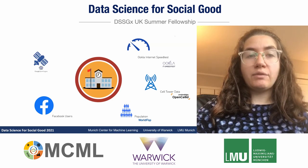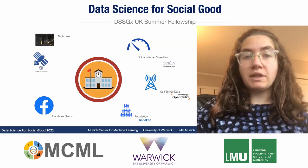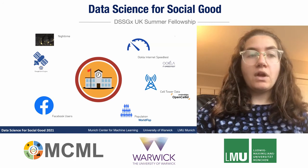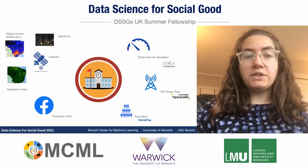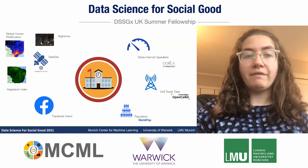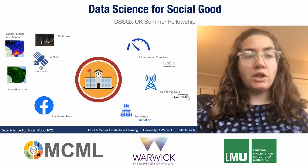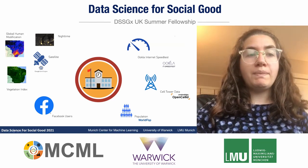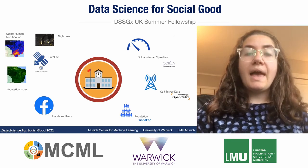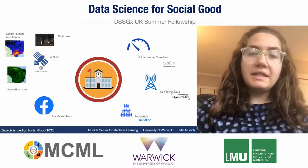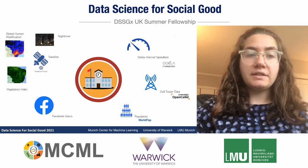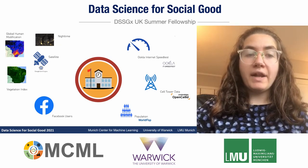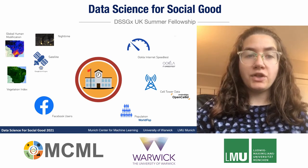Lastly, we have satellite data in three different forms. Nighttime lights shows areas with lots of light and presumably high levels of internet. Global human modification is a dataset created by engineers. And measuring vegetation is our last dataset — the assumption is that areas with higher vegetation are more rural and have less internet connection, while areas with low levels are more urban and have higher connection. Nighttime imagery, global human modification, and Facebook users prove to be the most important features powering our model. These datasets are continuous, meaning they don't stop at a certain spatial scale or boundary — they are globally ubiquitous and standardized, and don't contain the human error that survey data does.